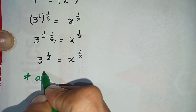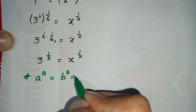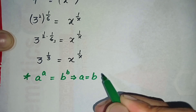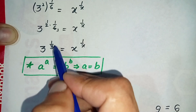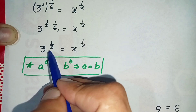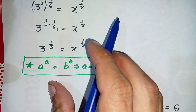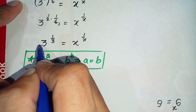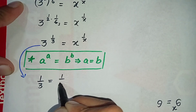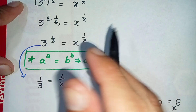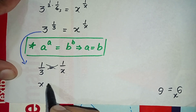Now we use the math property: when a raised to power a is equal to b raised to power b, this implies a must be equal to b. Here the bases are not directly similar, but it is similar with the numbers in the denominator. We compare the powers with each other: 1 over 3 is equal to 1 over x. Cross multiplying, 1 times x is x and 3 times 1 is 3, so x equals 3.